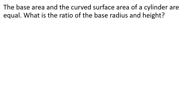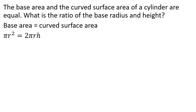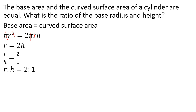The base area and the curved surface area of a cylinder are equal. What is the ratio of their base radius and height? The base area is πr² and the curved surface area is 2πrh. Setting them equal: πr² = 2πrh, which simplifies to r = 2h. Therefore, r to h equals 2 to 1.